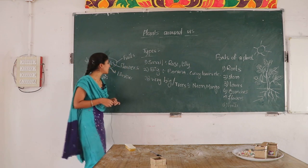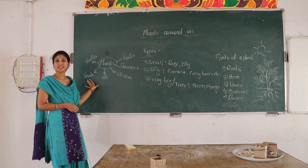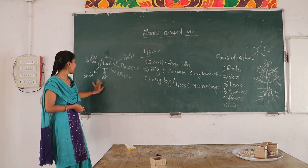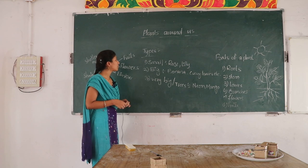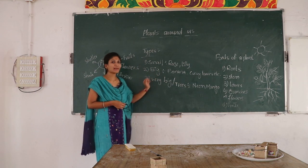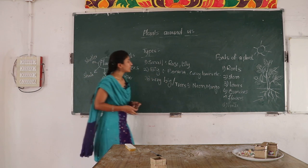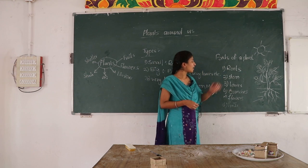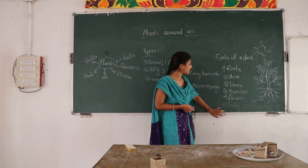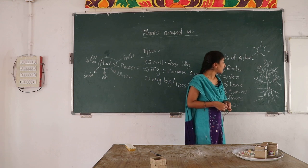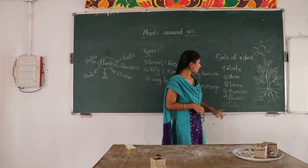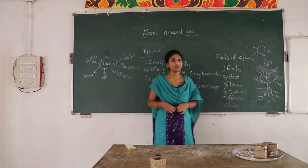Up to now, what are the uses of the plants? Plants give us fruits, flowers, timber, air, shade, shelter. Types — how many types are there? Three: small plants, big plants, very big plants. Parts of a plant: roots, stem, leaves, branches, flowers, fruits. Today we learned about roots, stem, and leaves. Tomorrow we will discuss the remaining three parts.